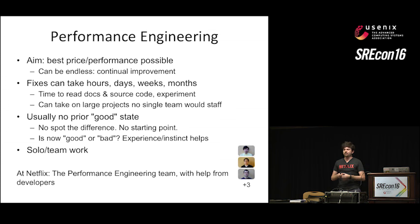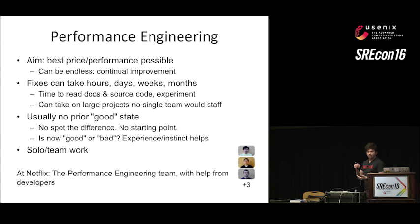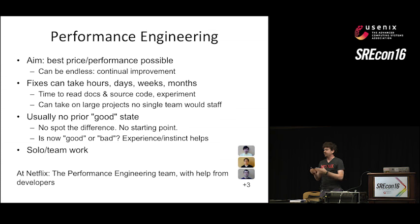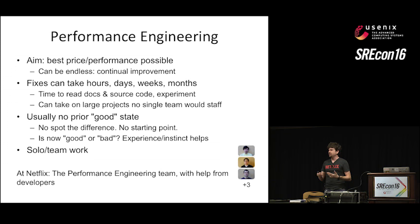The fixes can take a long time. As a performance engineering team, we can take on projects that other individual teams wouldn't be able to staff — for example, there may be a language used at Netflix without a dedicated team responsible for performance optimization. We don't have a specific Java team or Node.js team, so the performance engineering team helps deliver projects by getting profilers to work for these different languages.